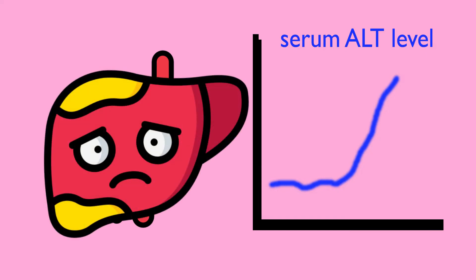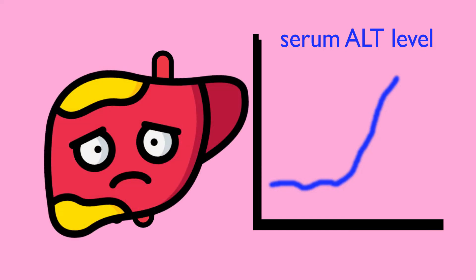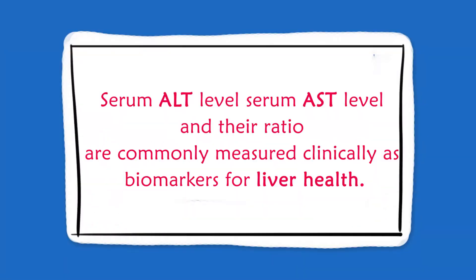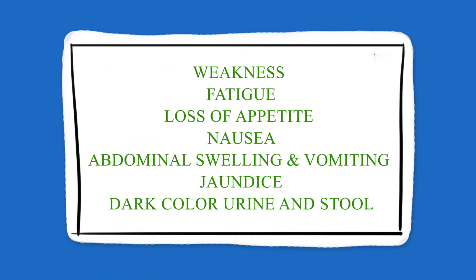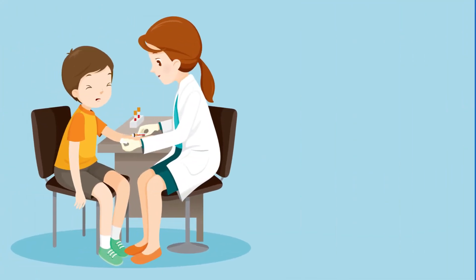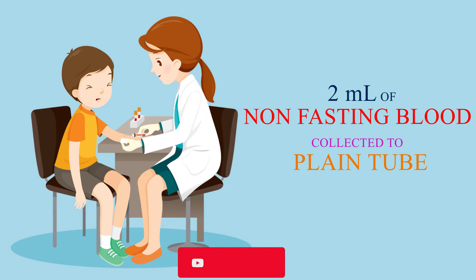Most increases in ALT levels are caused by liver damage. Serum ALT and AST levels and their ratio are commonly measured clinically as biomarkers for liver health. Weakness, fatigue, loss of appetite, nausea, abdominal swelling, vomiting, jaundice, dark colored urine, and stool are indications for a serum ALT test, also known as the SGPT test.